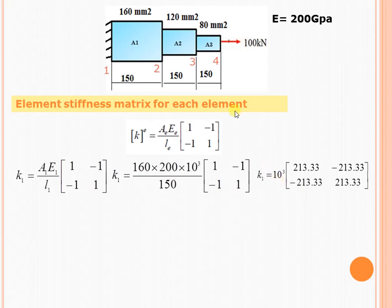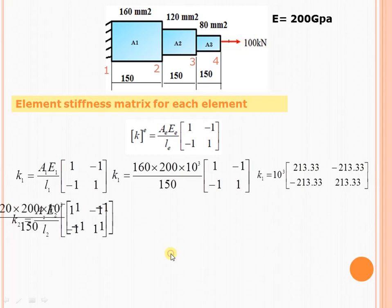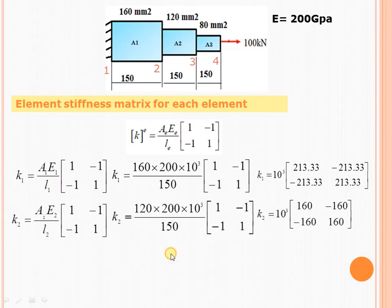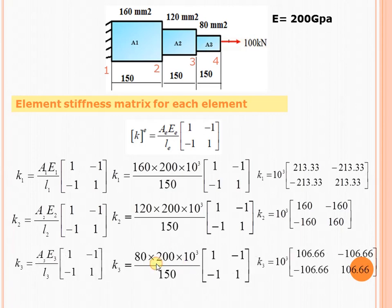In the same fashion we find k2 = A2*E2/L2 times [1, -1; -1, 1]. By putting the area of the second element, value of E and length, we get the resultant k2 matrix. Again in the same fashion we get the elemental stiffness matrix for the third element, and by putting the values we get the resultant matrix. Note that 10³ is common for all three elements.